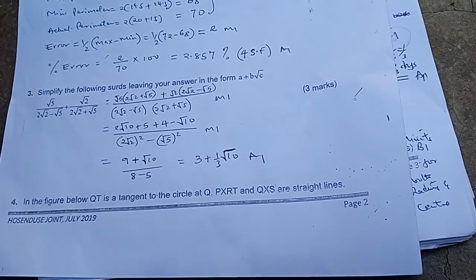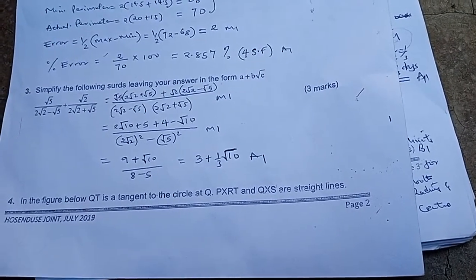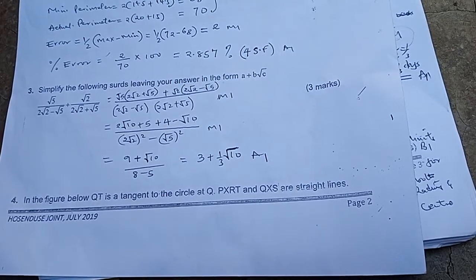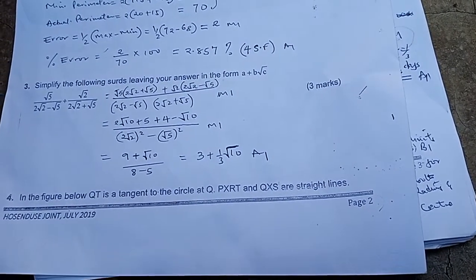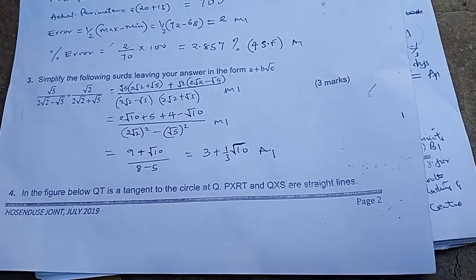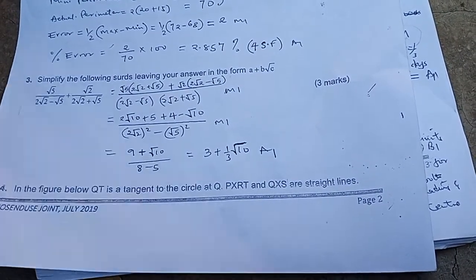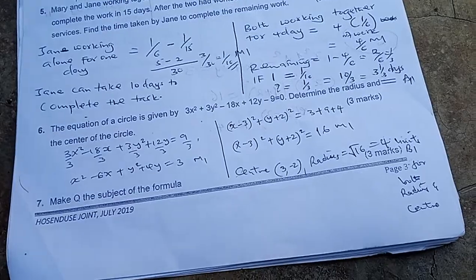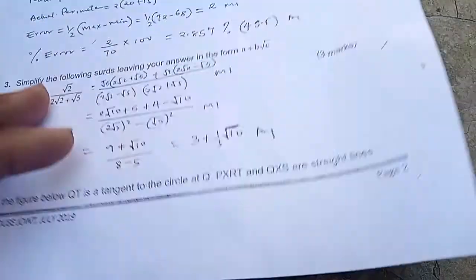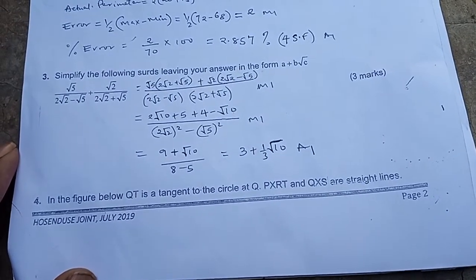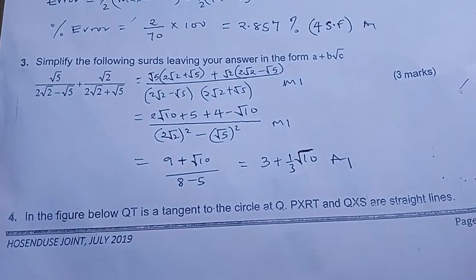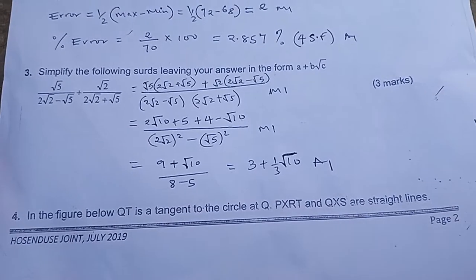As you can see in question 4 here, I'm going to read it out loudly so that you may get it as you read along with me. Now in the figure below, QT is a tangent to a circle at Q.